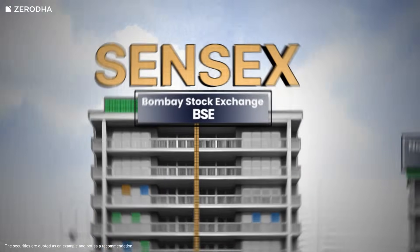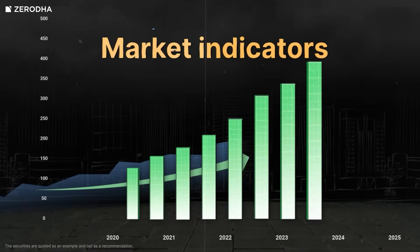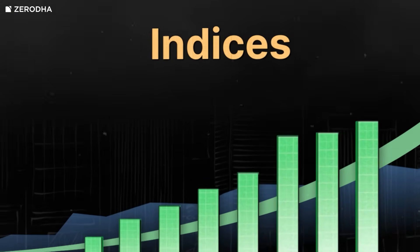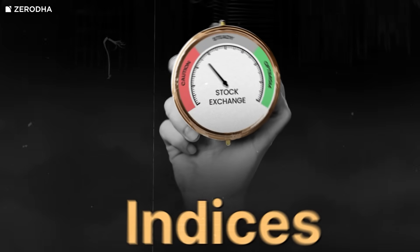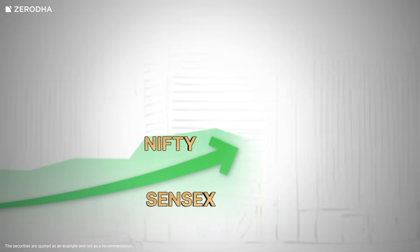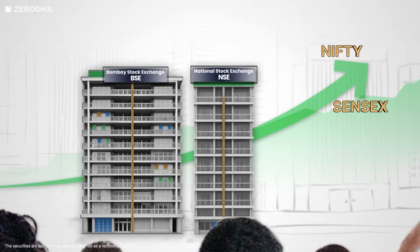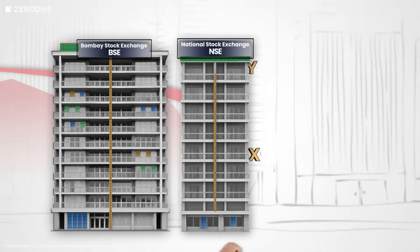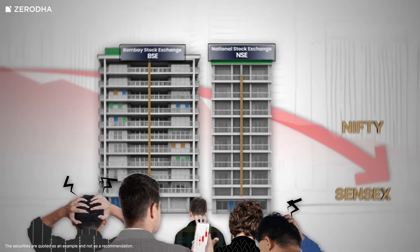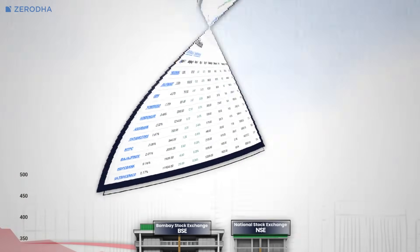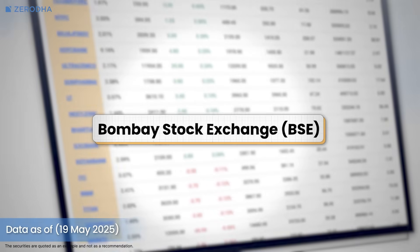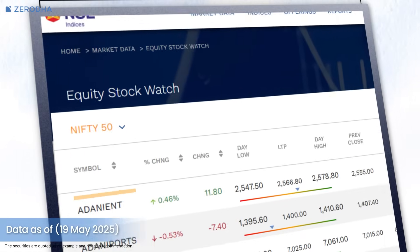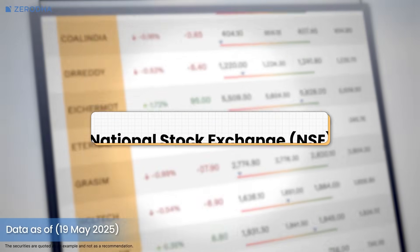To put it simply, Sensex and Nifty are market indicators, also referred to as indices. These indices are often referred to as the barometers of the stock market because they represent how the market as a whole is performing. If the Sensex or Nifty goes up, it's generally a sign that the market is doing well; if they go down, it's a signal of declining market sentiment. Think of them as lists that track the performance of the top 30 companies listed on the Bombay Stock Exchange, or BSE, and the top 50 companies on the National Stock Exchange, or NSE.